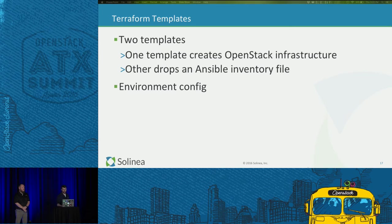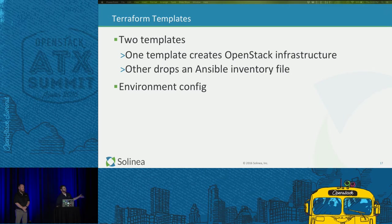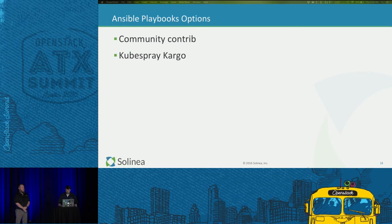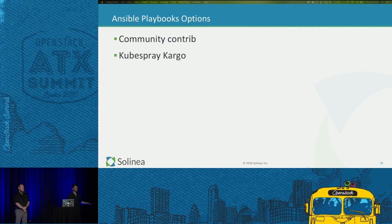The Terraform templates we're dealing with — there's only two. You're going to find this is really pretty easy as far as creating the infrastructure. One template simply creates the OpenStack infrastructure. The other is going to drop an Ansible inventory file into the right place in the Cargo directory. Then we're just going to launch Cargo and it's going to do its thing against those hosts. We chose Ansible mainly because our clients are already using Ansible — they have developed expertise internally — and we didn't want to give them yet another way to deploy Kubernetes.